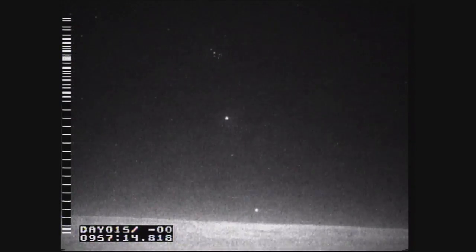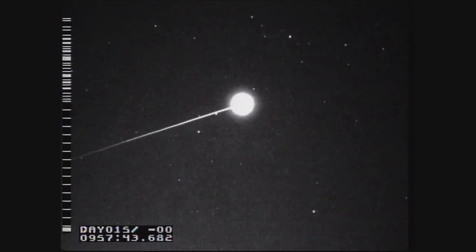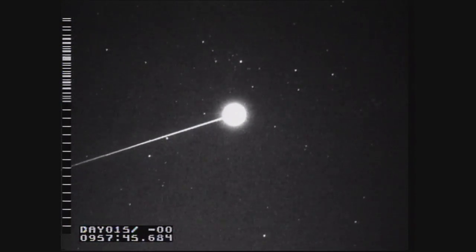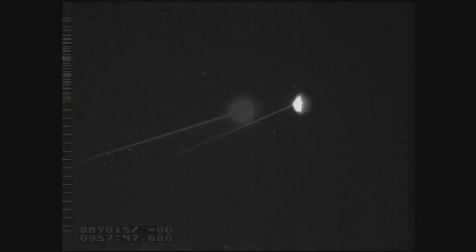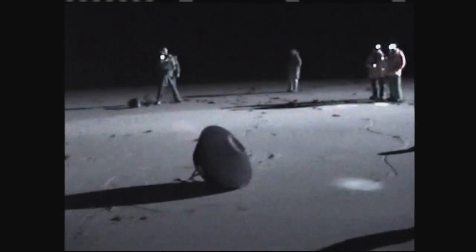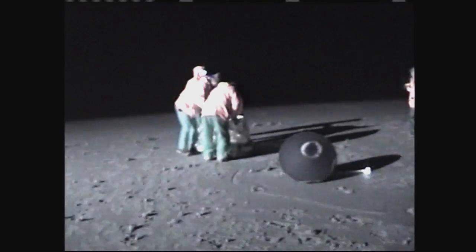Slightly denser than balsa wood, PICA proved itself to be highly effective as the heat shield material that protected the Stardust capsule during its return to Earth in January of 2006. It set the record for the fastest Earth reentry speed of any human-made object on its return from deep space.